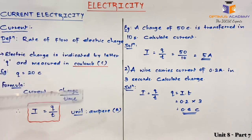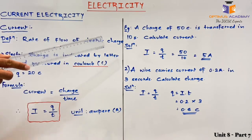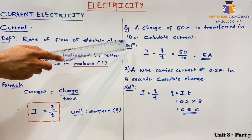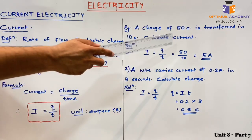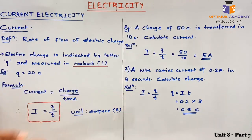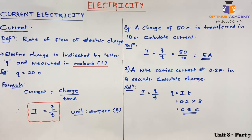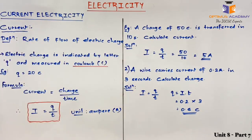I have solved two numericals based on current on the right hand side, you can see those. The first asks us that a charge of 50 coulomb is transferred in 10 seconds — calculate current. So current is Q upon T, that is equal to 50 upon 10, because Q is 50 and time is 10 seconds. So 50 upon 10 will be 5 ampere.